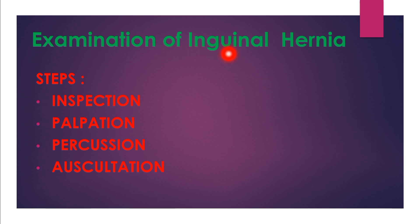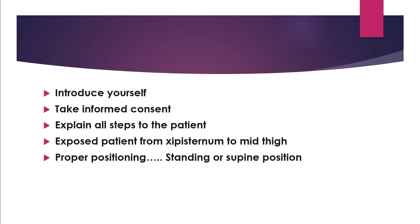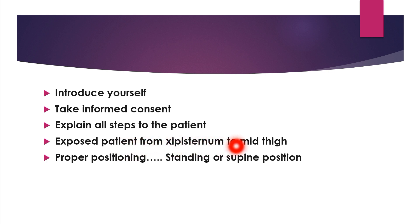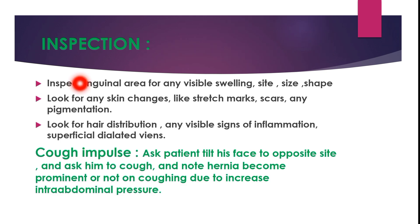Today we will talk about the examination of the inguinal hernia. The steps involved in hernia examination are inspection, palpation, percussion, and auscultation. Before starting the examination, you should introduce yourself to the patient, take consent, and explain all the steps. Expose the patient from the xiphisternum to the mid-thigh. Proper positioning for hernia examination is the supine or standing position.